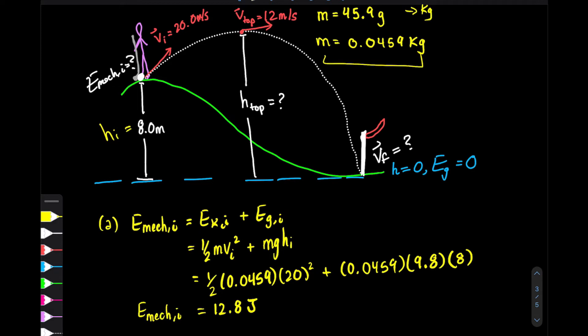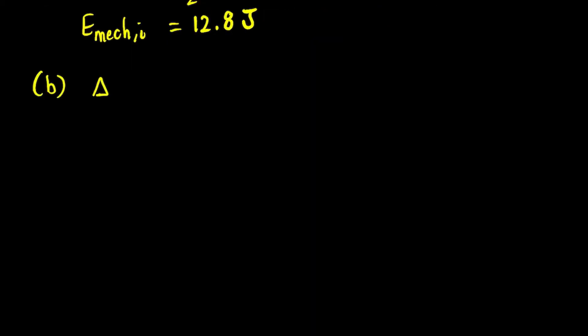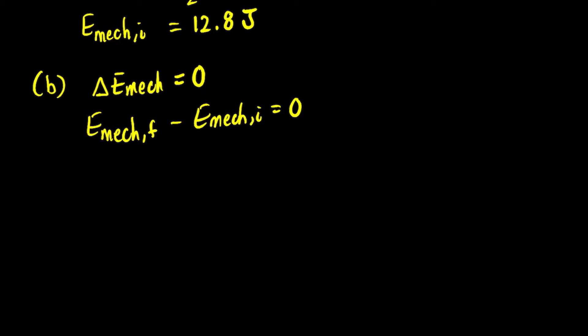For part B, we calculate the height at the top using the conservation of energy — the mechanical energy initially equals the mechanical energy at the top, or at any other point. In an isolated system the change in mechanical energy is zero, so mechanical energy final minus mechanical energy initial equals zero, meaning mechanical energy initial equals mechanical energy final.